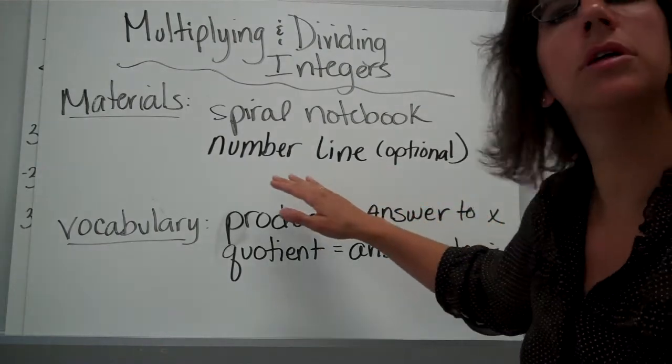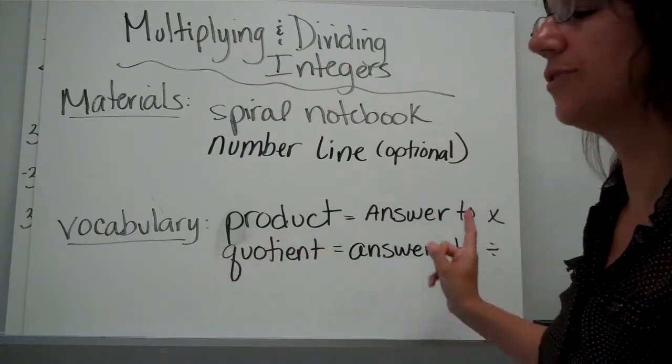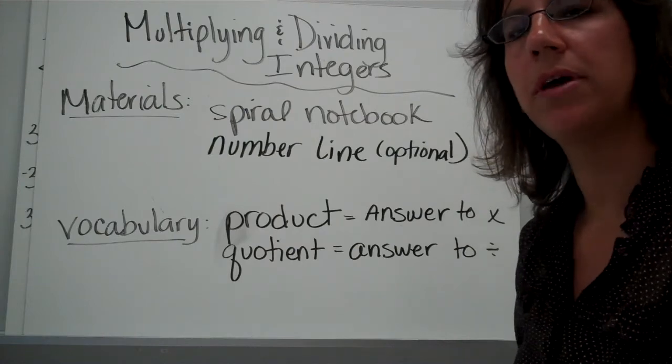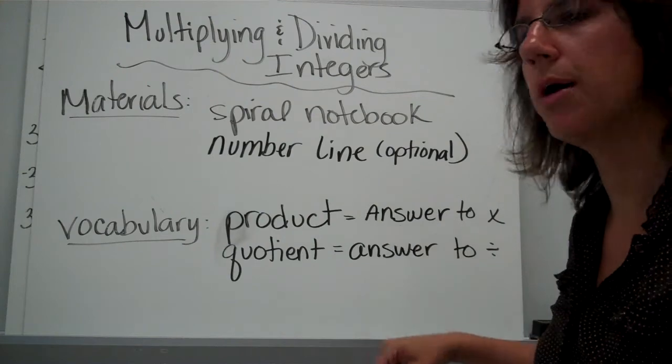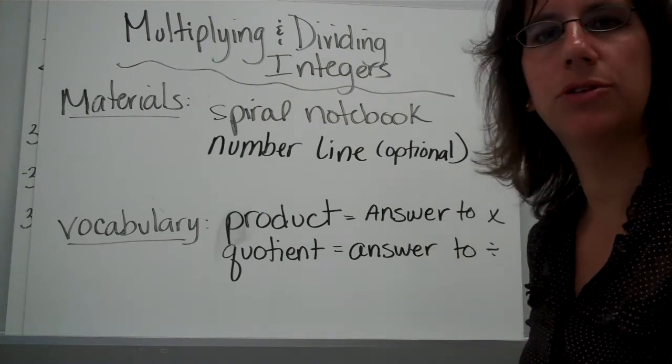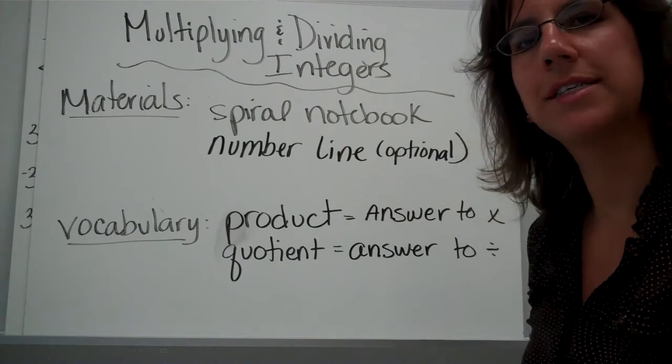If you don't have a number line and you want to draw one in your notes, you can do that. Or you can just go along with the examples as we move along. Once you have your title, go ahead and write down these vocabulary words. Product means the answer to any kind of multiplication problem. And quotient means the answer to a division problem.